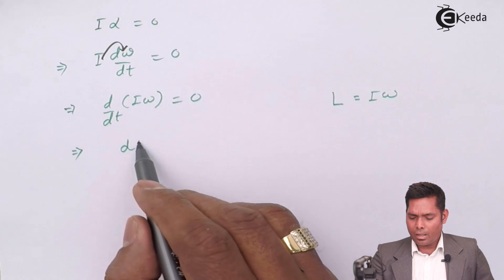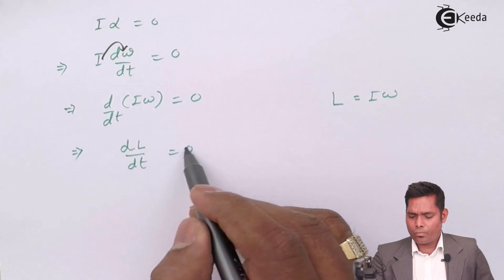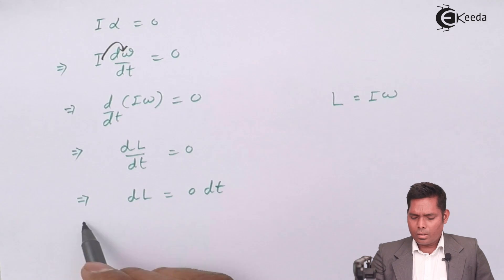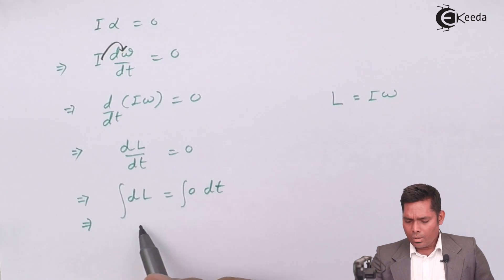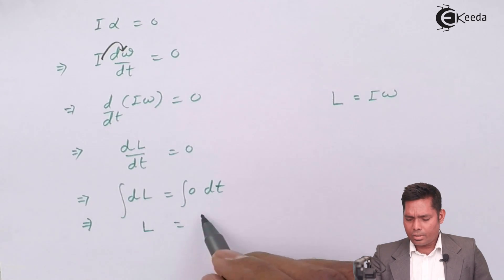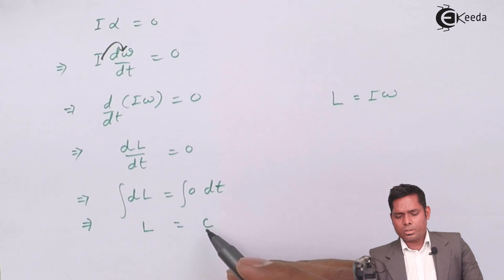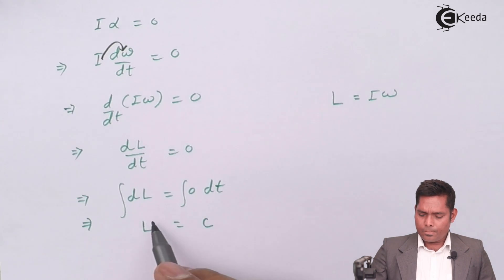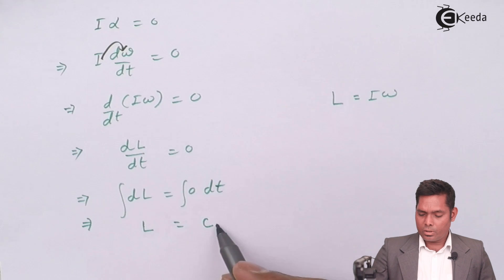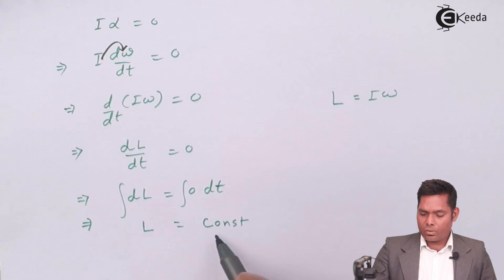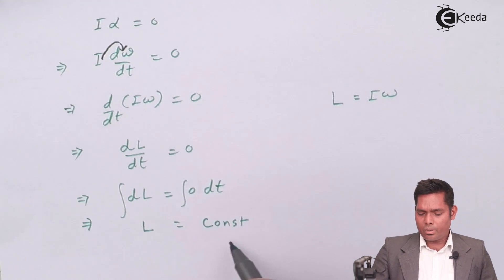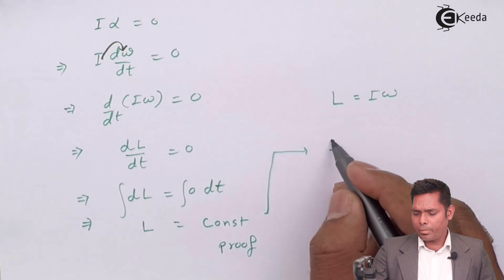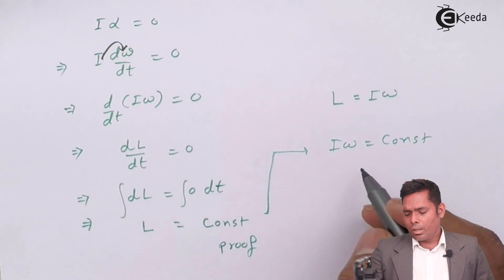So I will write dL/dt = 0. If dL/dt = 0, then dL = 0·dt. Taking integration on both sides, L equals some constant C. This means angular momentum is constant. So this gives that L is constant — the angular momentum of the system will remain constant. And therefore this is the proof. From here we can also write that since L = Iω, I·ω is constant for the system.